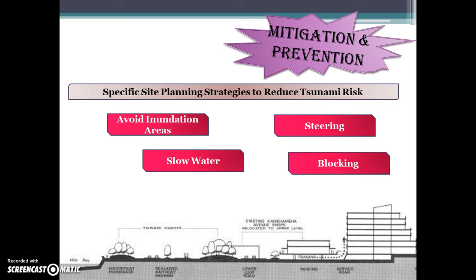Blocking is the fourth strategy: walls, berms, and parking structures can be built to block waves. In Hilo, the 1960 tsunami created widespread damage; the downtown was rebuilt according to the Hilo Downtown Development Plan passed in 1974. Safe building areas were determined based on the 1946 and 1960 tsunamis. Buildings below the 20-foot elevation control line had to withstand major tsunami forces. Buildings made of concrete, masonry, and heavy steel frame can withstand tsunami forces, while wood, manufactured homes, and light steel frame structures are not valid options.